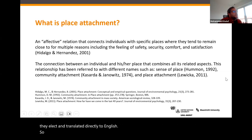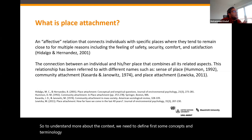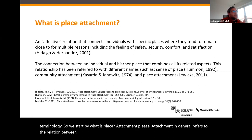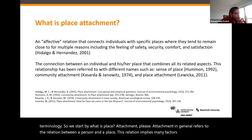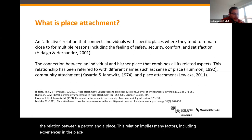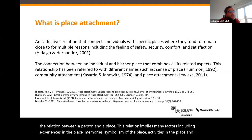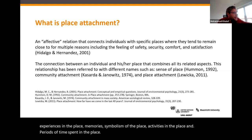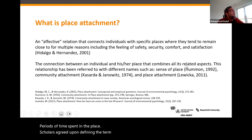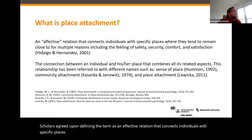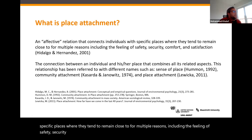To understand more about the context, we need to define some key concepts. Place attachment refers to the relation between a person and a place. This relation implies many factors, including experiences in the place, memories, symbolism of the place, activities in the place, and periods of time spent there. Scholars define it as an affective relation that connects individuals with specific places where they tend to remain close to, for reasons including the feeling of safety, security, comfort, and satisfaction.